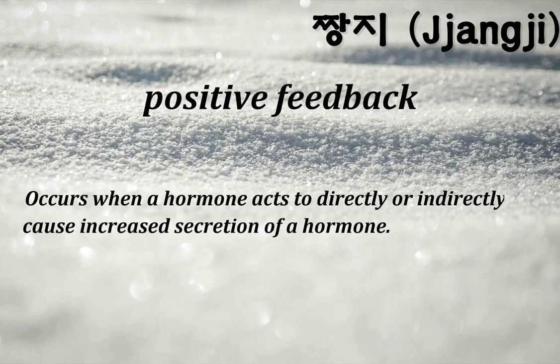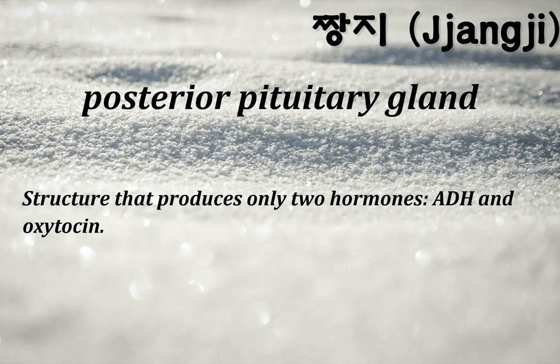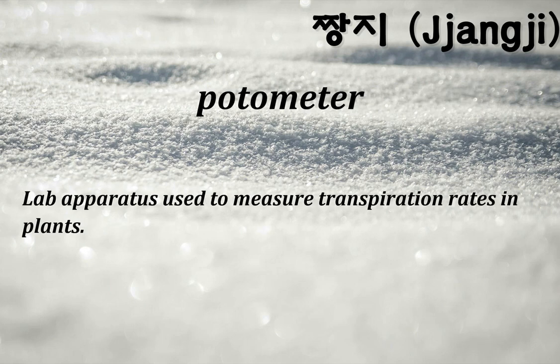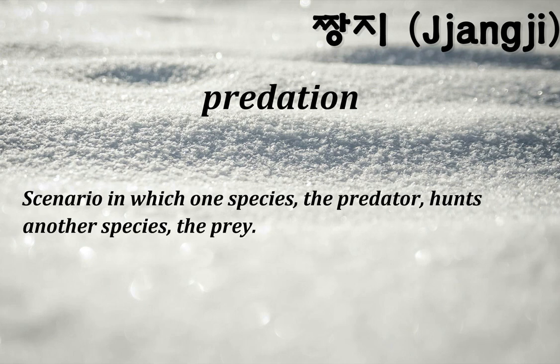Positive feedback: occurs when a hormone acts to directly or indirectly cause increased secretion of a hormone. Posterior pituitary gland: structure that produces only two hormones — ADH and oxytocin. Potometer: lab apparatus used to measure transpiration rates in plants. Predation: scenario in which one species — the predator — hunts another species — the prey.